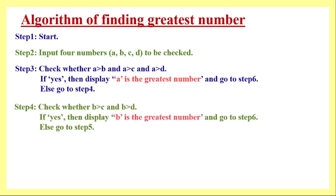In step four, we check number two with respect to number three and number four: whether B is greater than C and B is greater than D. We don't need to check with respect to A, as already explained. If this condition is satisfied — the result is yes or true — then B is the greatest number. We display the message and go to step six, ending execution.